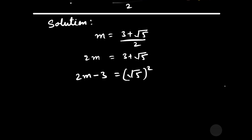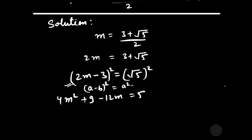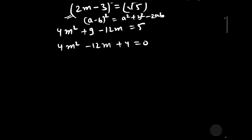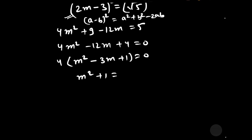Squaring both sides, we have 4m² + 9 − 12m = 5. We opened the square of (2m − 3) using the formula (a − b)² = a² + b² − 2ab. This simplifies to 4m² − 12m + 4 = 0. Taking 4 as common, we get m² − 3m + 1 = 0, which we can write as m² + 1 = 3m.